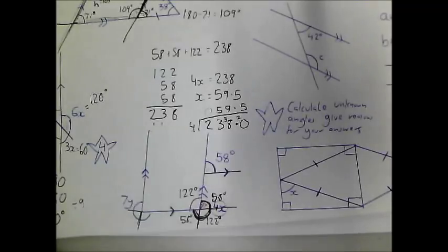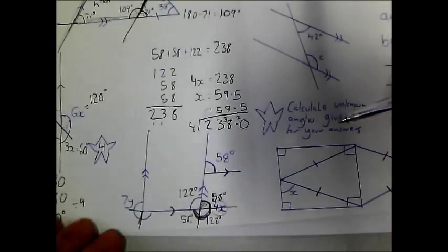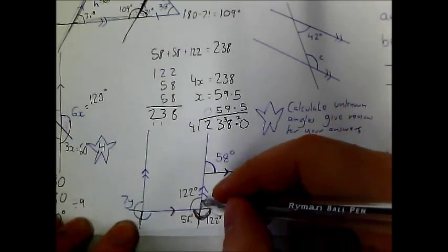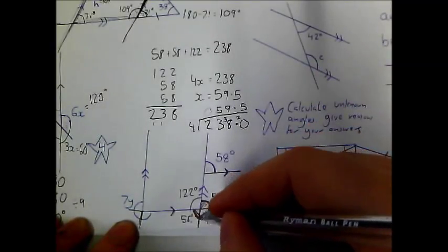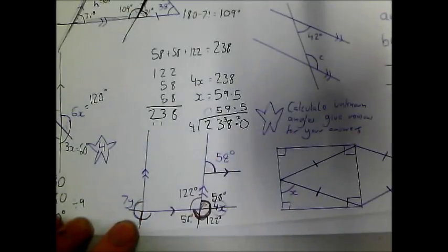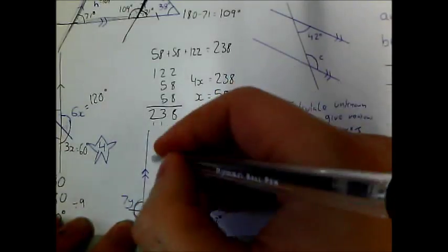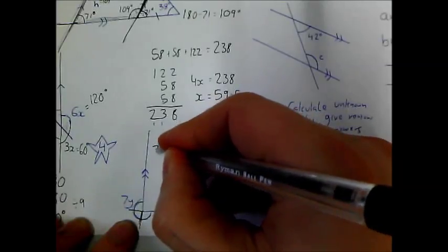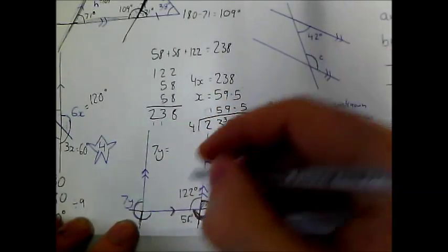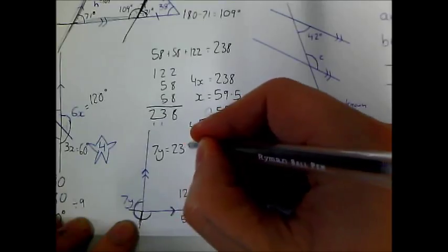And that is a tricky question — that's why it's an extension. Now we can do a similar thing here. All of this angle is going to be the same as all of this angle, so you can work out what y is worth. 7y equals 238.